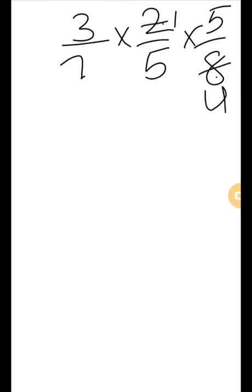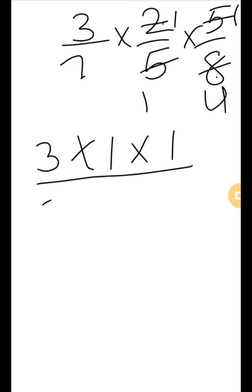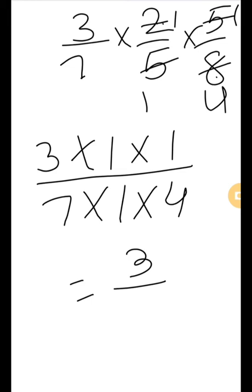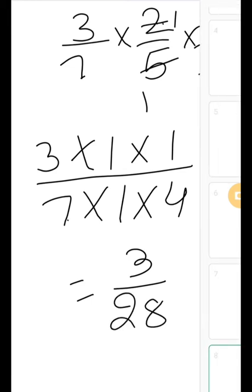Next, 5 and 5: 5 ones are 5, 5 ones are 5. Now multiply the numerators: 3 multiply 1 multiply 1. And the denominators: 7 multiply 1 multiply 4. The answer will be 3 by 7 times 4, which is 3/28.